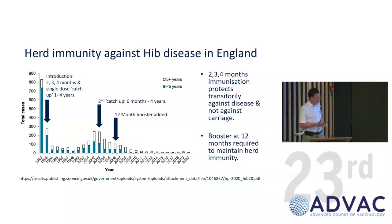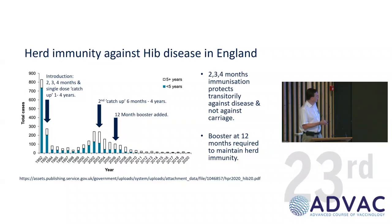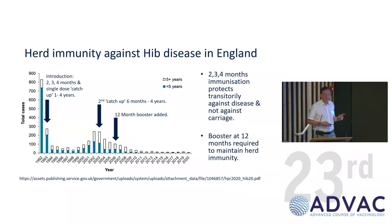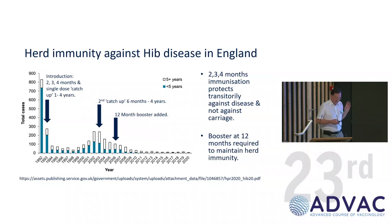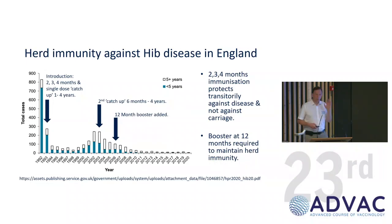Of course, in the midst of this we were introducing meningococcal C conjugate vaccines at about this time, and again, when we introduced them, there wasn't consideration of herd immunity effects — it was mostly introduced on the basis of direct protection.